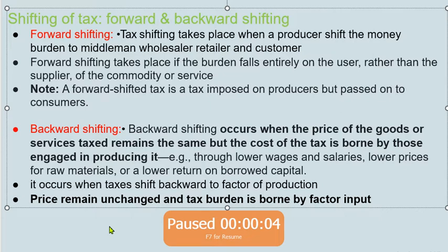In backward shifting, the price of taxed goods or services remains the same, but the cost of tax is borne by those engaged in producing it — for example, through lower wages and salaries of workers, lower prices of raw materials, or lower returns on borrowed capital. It occurs when taxes shift backward to the factor of production, meaning the price remains unchanged and the tax burden is borne by factor inputs.